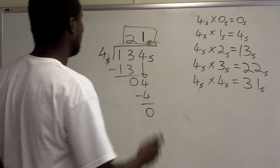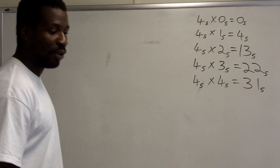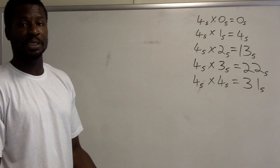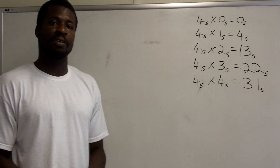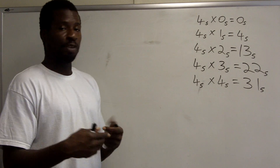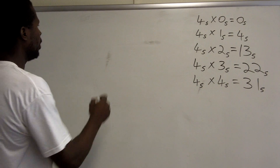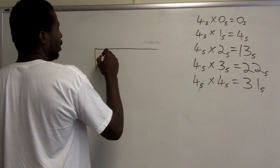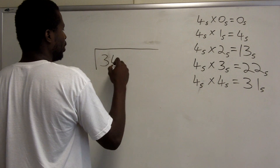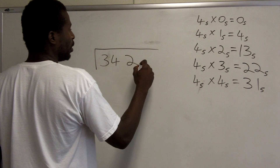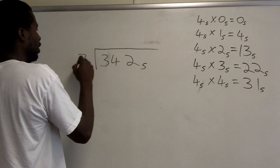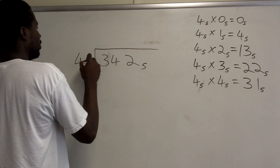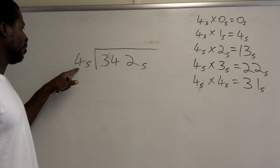Let's do another one. If you're working in another base, you need to make a multiplication table for that base — this table only applies because the problem uses base 5 numerals. So let's do 342 base 5 divided by 4 base 5.